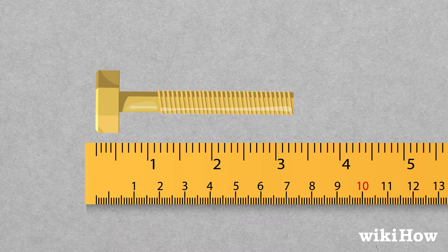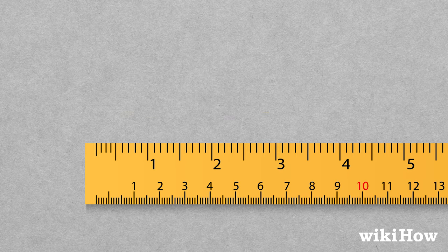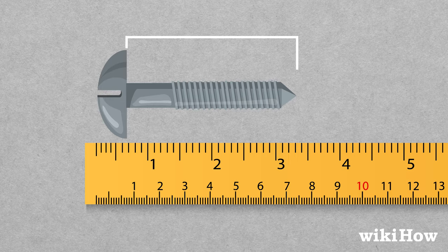To find the length of a screw, line it up with a ruler and measure it from the tip of the screw to the head. If the screw has a rounded head, measure to the flat part, where the screw will lie flush with the surface that it's going to be screwed into.